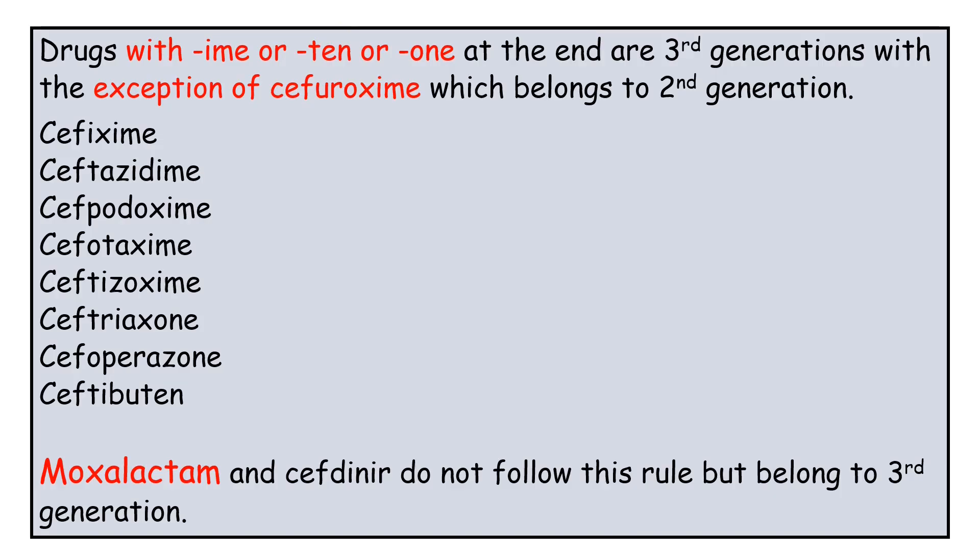Drugs with 'ime', 'ten', or 'one' at the end are third generation, with the exception of Cefuroxime which belongs to the second generation. The drugs in the third generation are Cefixime, Ceftazidime, Cefpodoxime, Cefotaxime, Ceftoxine, Ceftriaxone, Cefoperazone, and Ceftibutene. Moxalactam and Ceftineer do not follow the rule but belong to the third generation.